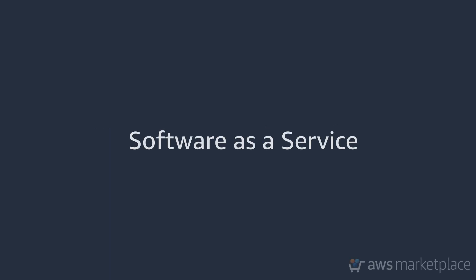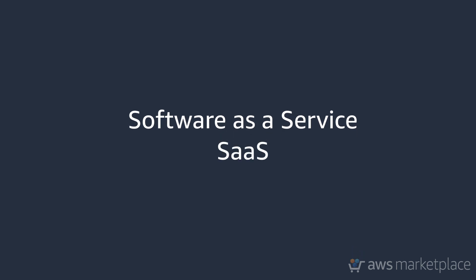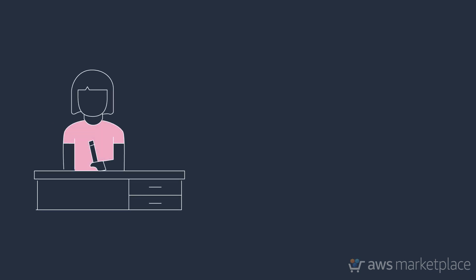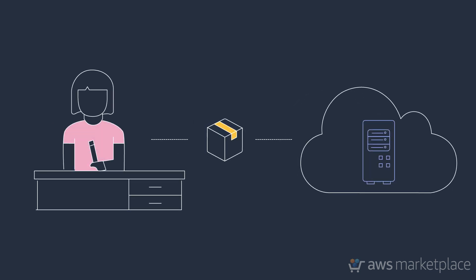Software as a Service, otherwise known as SaaS, is a product type offered in AWS Marketplace that allows sellers to manage applications in their own infrastructure, but leverage all the benefits of unified billing and the AWS Payment Platform.